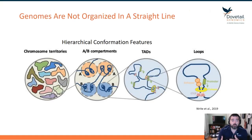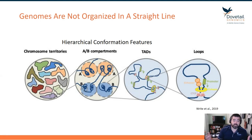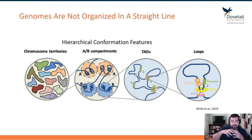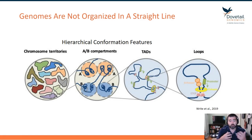If you think about the human genome, there's about three meters of DNA in each cell that has to be compacted inside of a nucleus, and it's not just packaged in a random format. There is a hierarchical structure, starting with chromosomal territories at the larger scale in the nucleus.